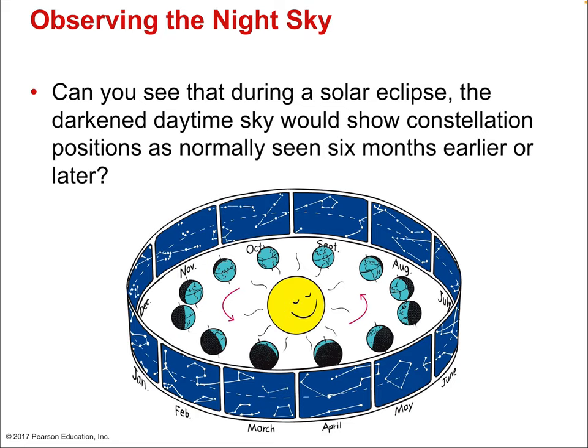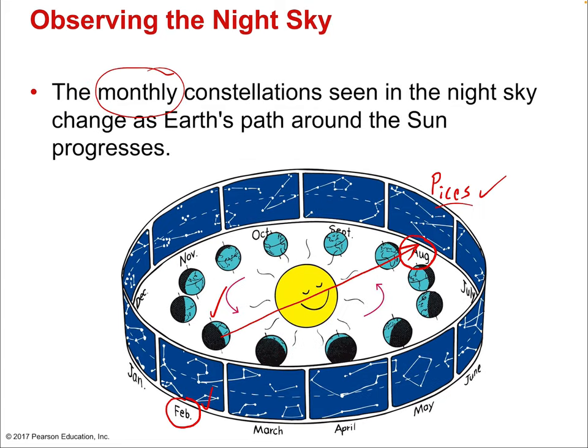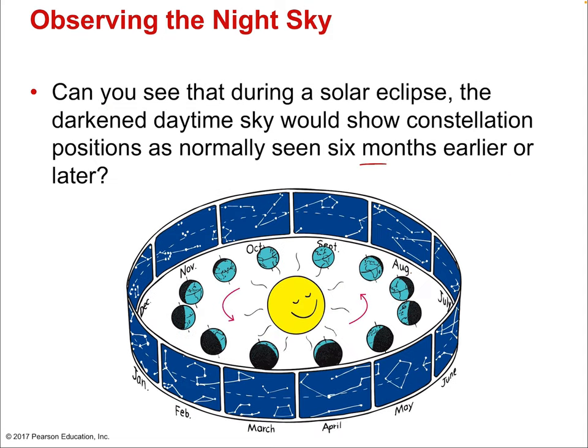During a solar eclipse, the darkened daytime sky would show the constellation positions as normally seen six months earlier or later. This is because Earth cuts exactly halfway across its circular orbit — and the full path around the sun takes 12 months, so half is six months.